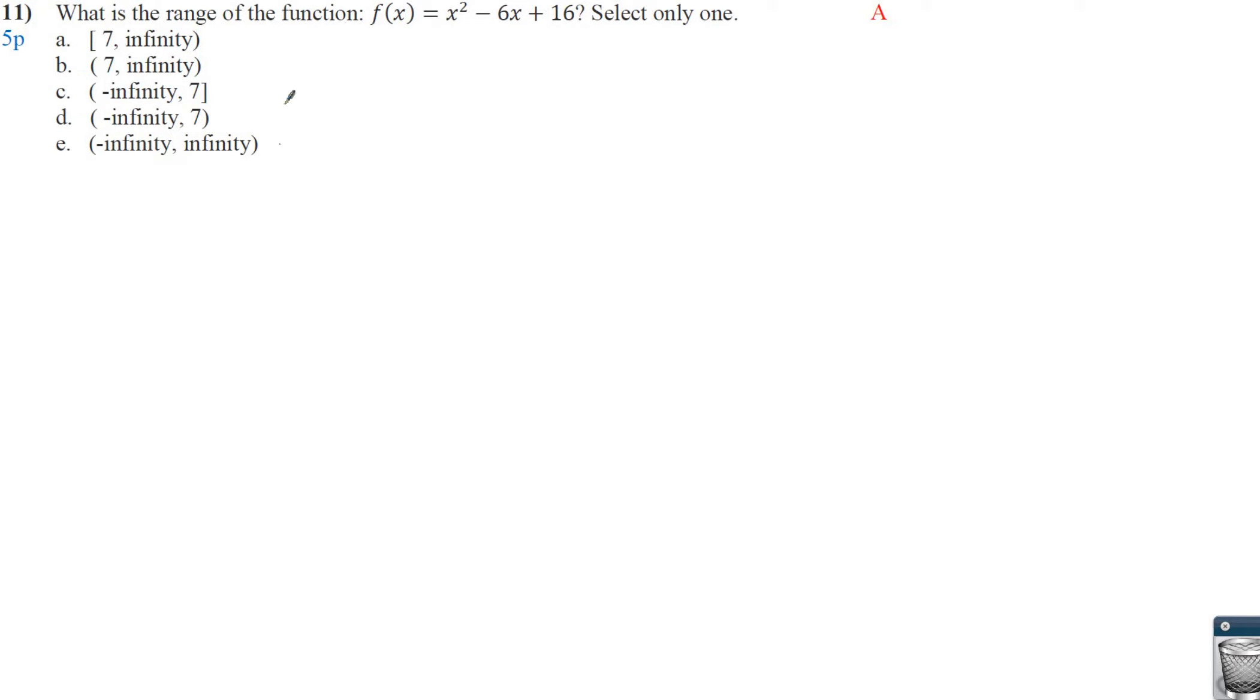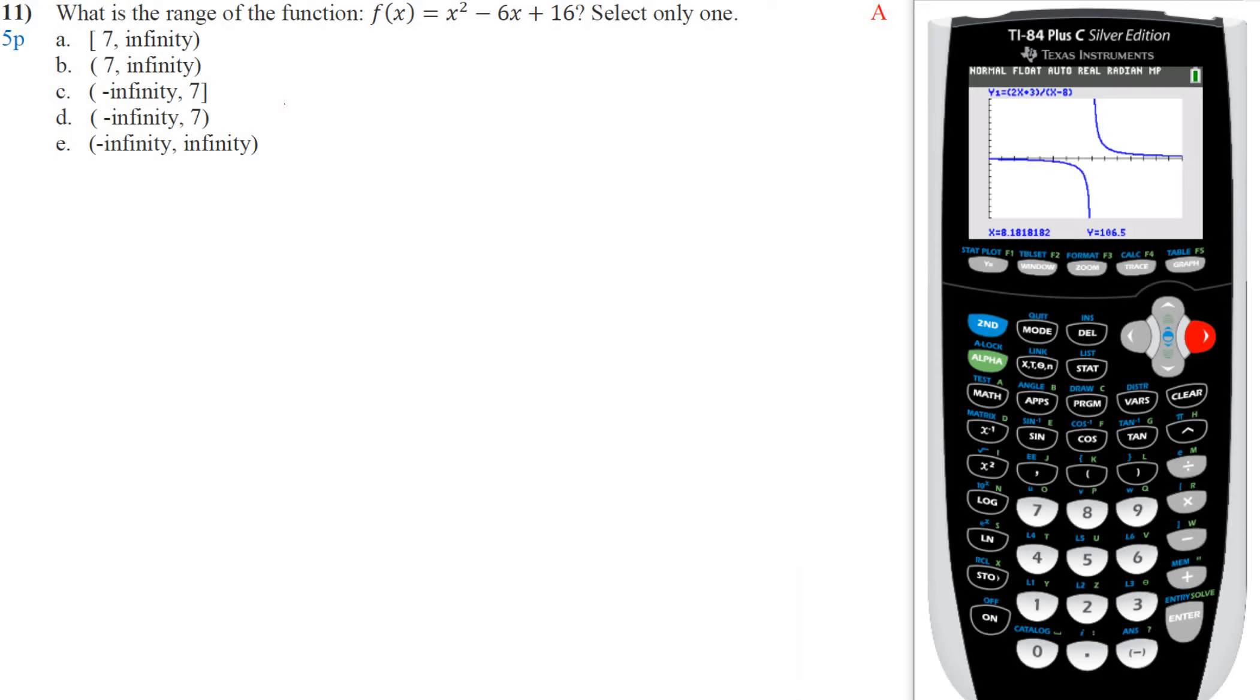For the range, I would look at your graph. So go over here to your equations. So we have x squared minus 6x plus 16. I'm going to do zoom standard. And it's thinking. There we go. So here we've got a parabola. Hopefully we realize that. And the range is going to be everything up. So we've got to look for that maximum.